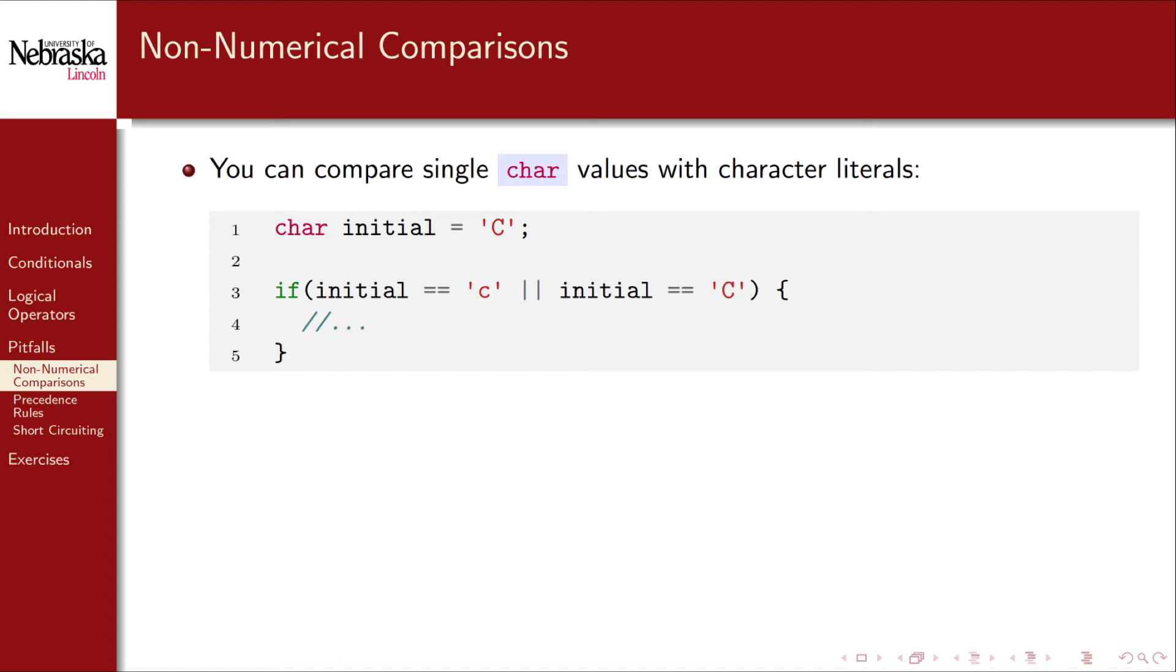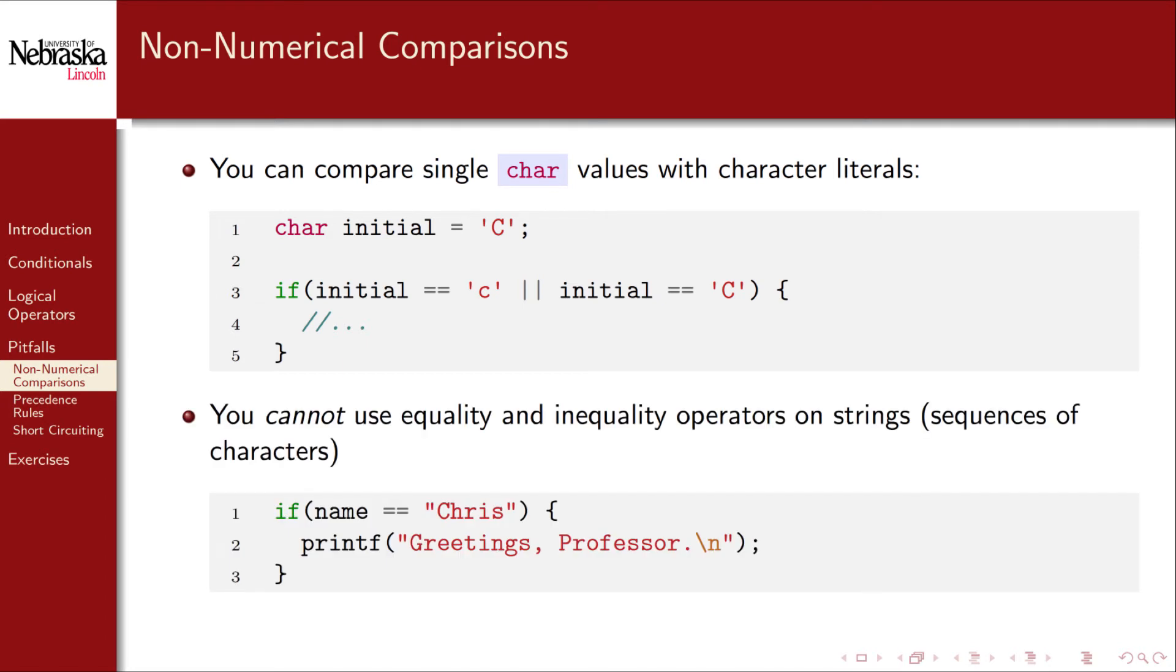You can do this because characters have a numerical value as associated in the ASCII text table. However you cannot use numerical comparisons on full strings. Checking for equality among strings, which we'll cover in more detail later on, is never correct.